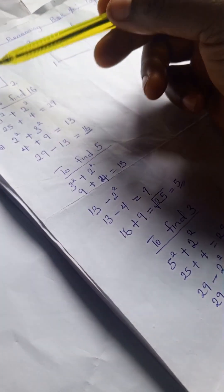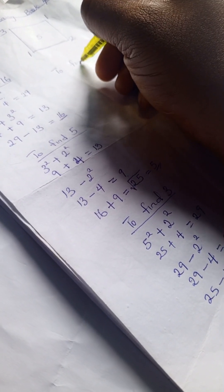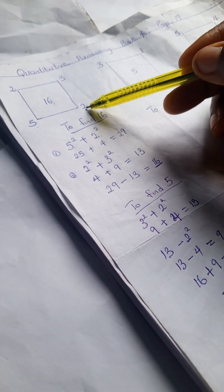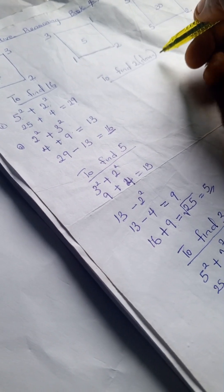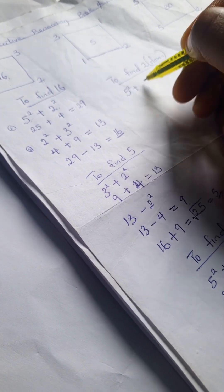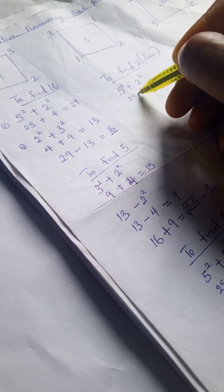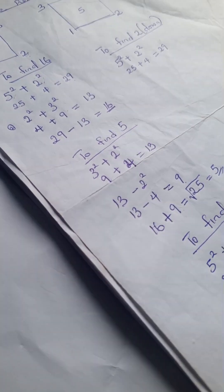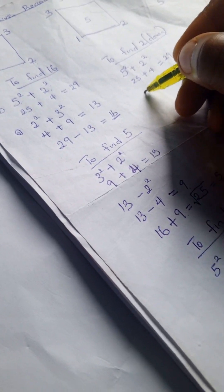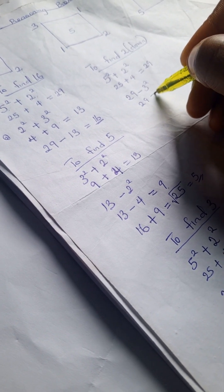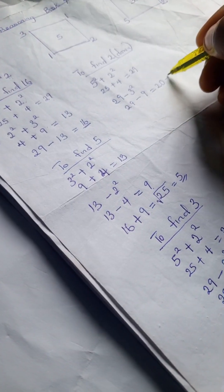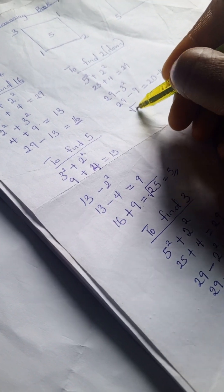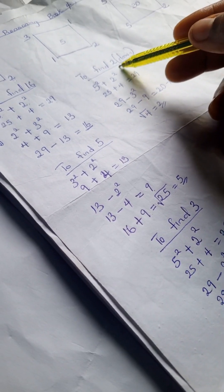Let's find this 2 down here. We have 5 squared plus 2 squared, which gives us 25 plus 4 equals 29. Then 29 minus 3 squared — that's 9 — and 29 minus 9 is 20. So 20 minus 16 gives us 4, and the square root of 4 is 2. That's how we got the 2 here.